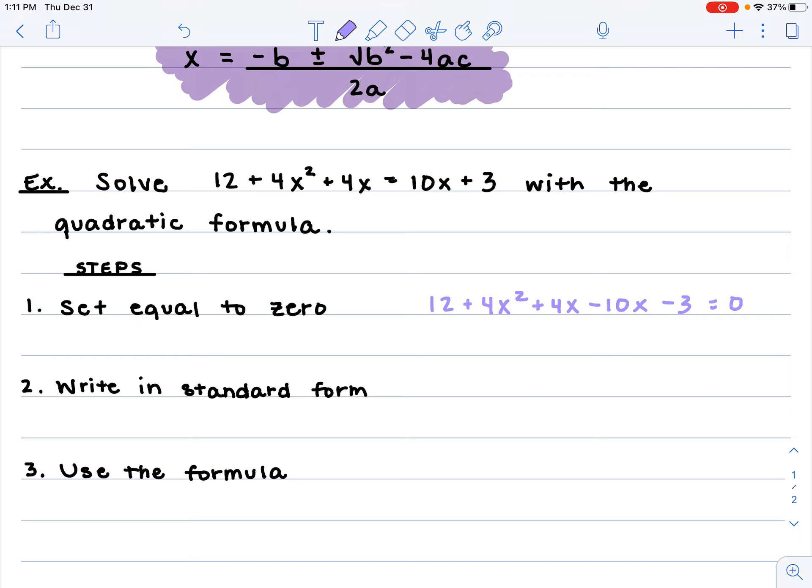We're going to write it in standard form. We want our x², then our x, then our constant term. I've got 4x². I've got 4x and -10x, which gives me -6x. And I've got 12 and -3, which gives me positive 9. So now I have my a value, my b value (which you do include those signs), and my c value.